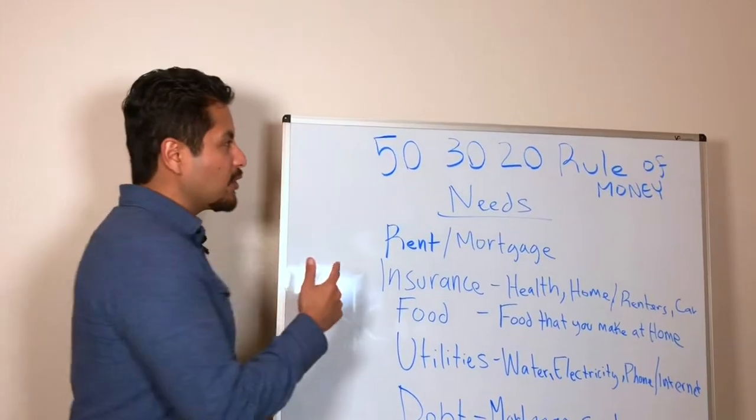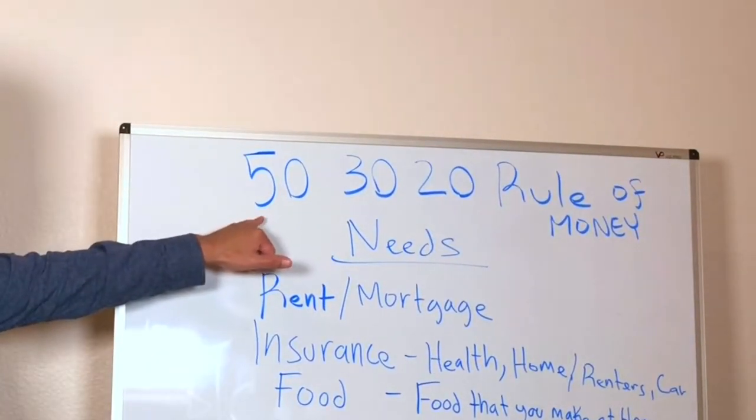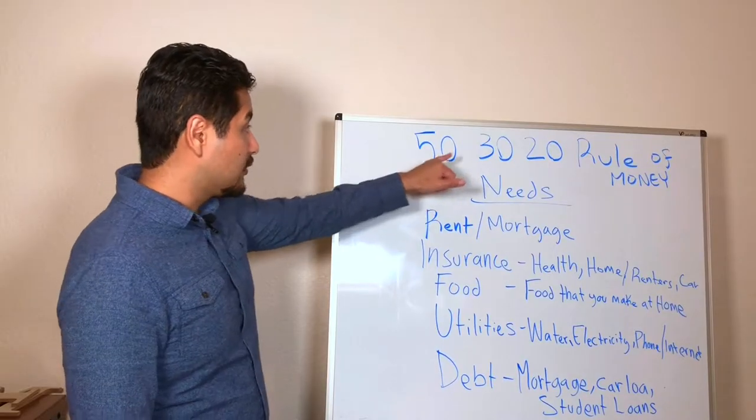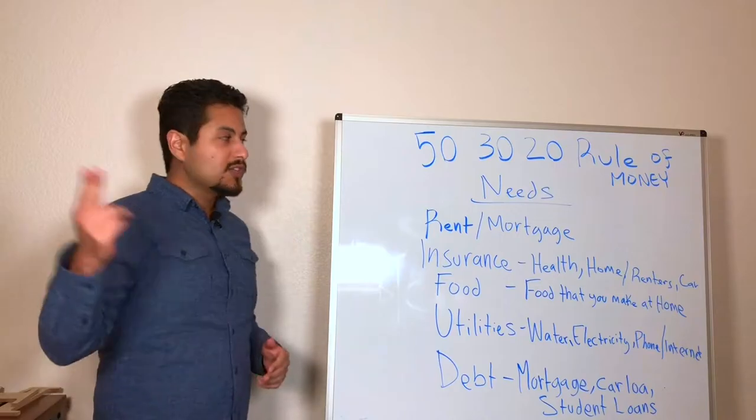So the 50-30-20 rule of money, it's pretty much, it's a budget which says that 50% of your money should go to needs, 30% to your wants, 20% to savings and investment. So let's start with needs.